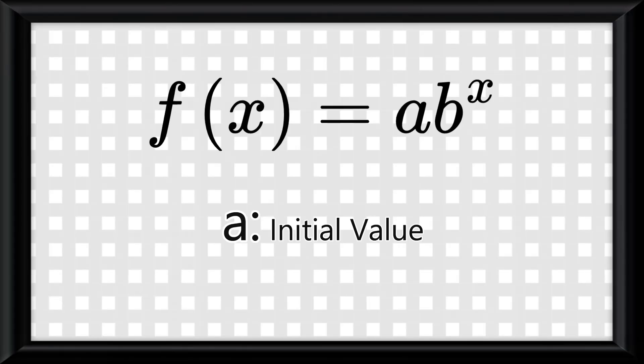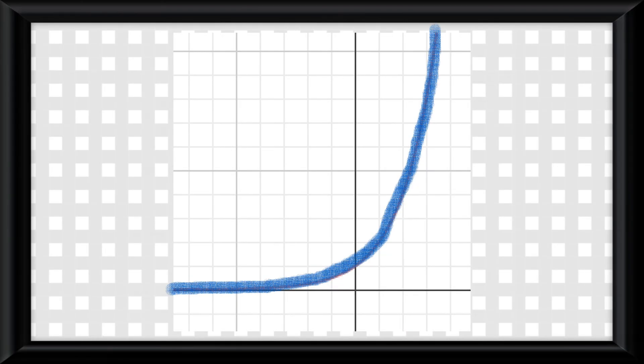We already know the skeleton equation to an exponential function is f of x equals ab to the power of x, where a is the initial value and b is the base. And take a look at the graph, it's a curve that keeps curving.